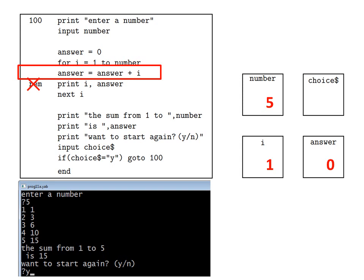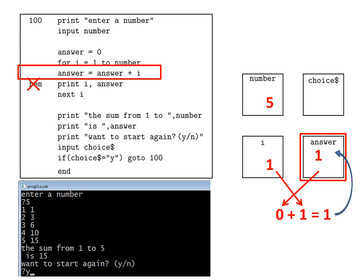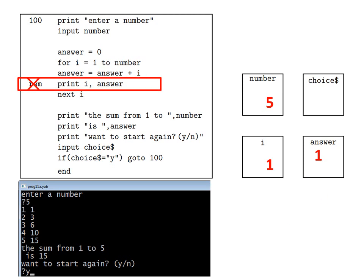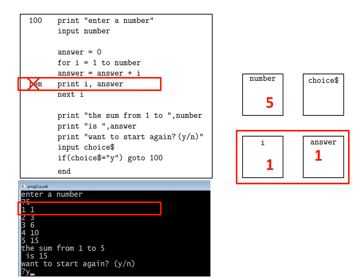Then the computer executes the line answer equals answer plus i, which means it takes the values currently stored in answer and i and adds them together: zero plus one equals one, and places the result back in the memory location for answer. Then the computer executes the diagnostic line print i answer, and on the black screen we see the current contents of i and answer.